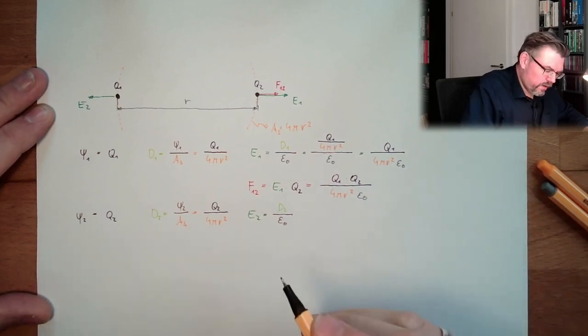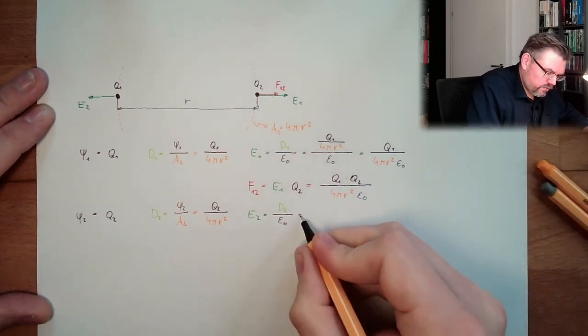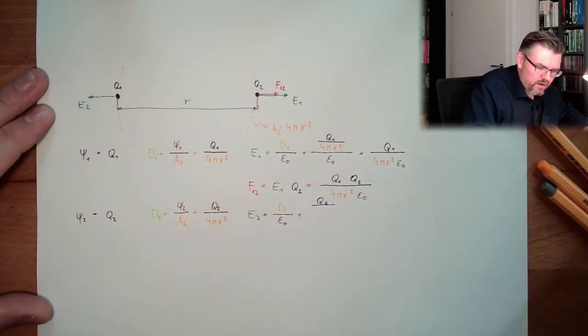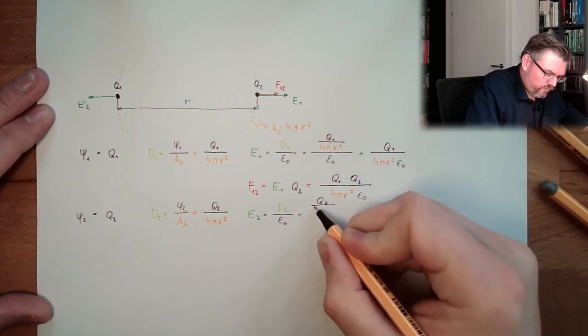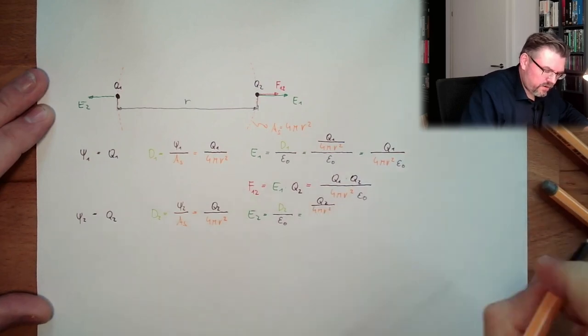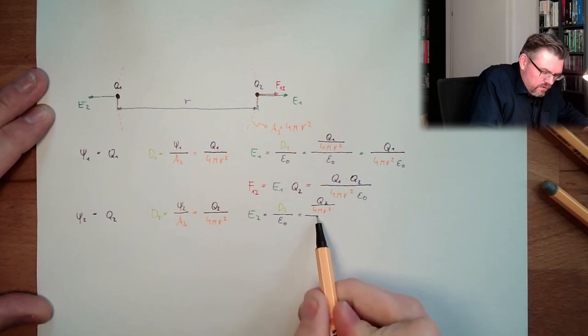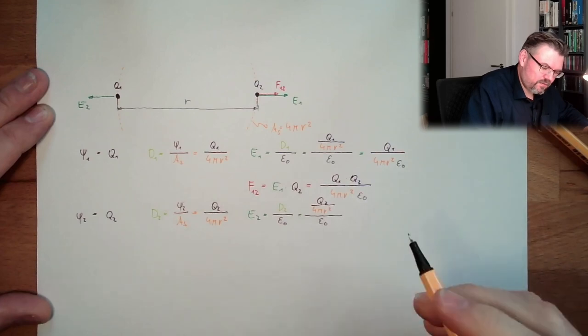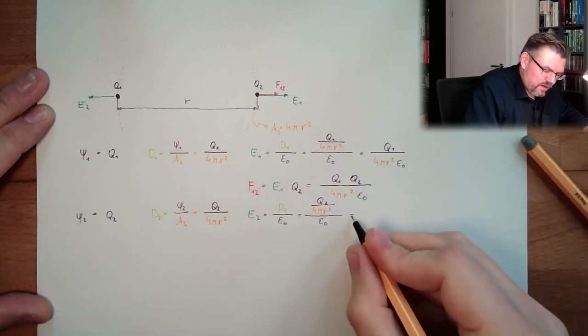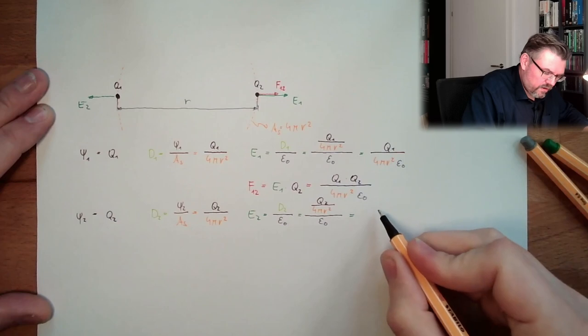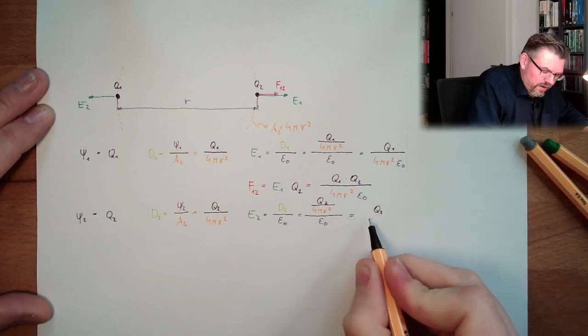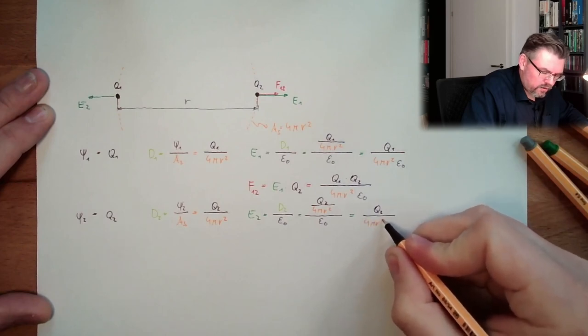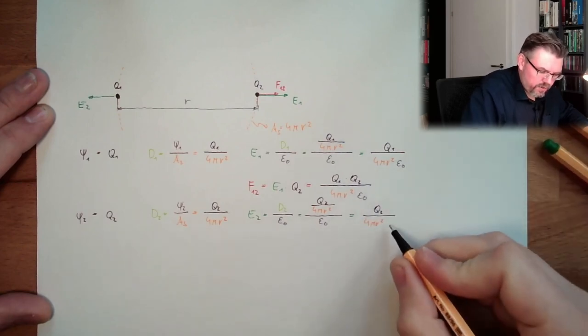And now we are going to insert this. Going to put this term in. So we have here Q2 divided by 4 pi r squared. And then divided by epsilon 0. Still all the same. Now get rid again of the double fraction. Now we have here Q2 divided by epsilon 0 multiplied by 4 pi r squared.